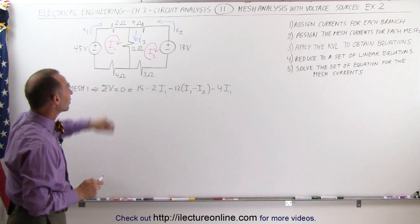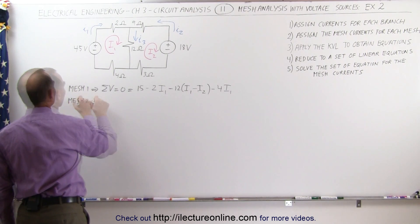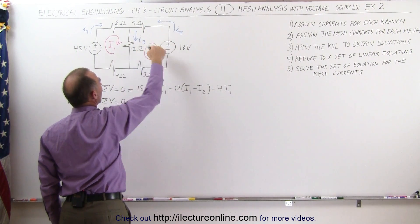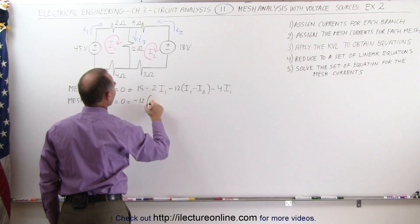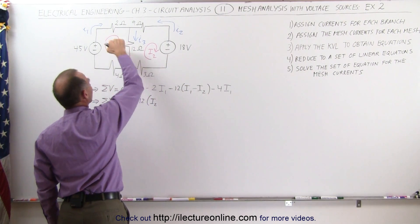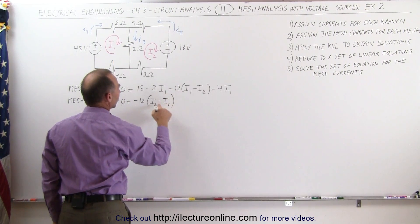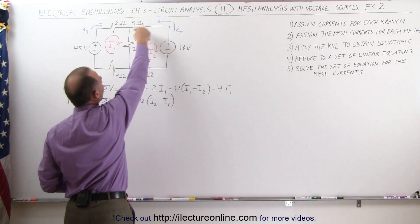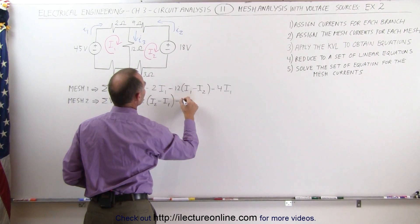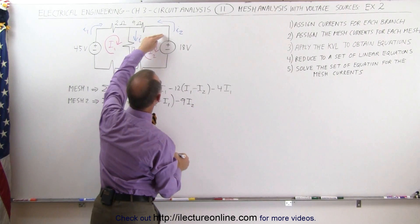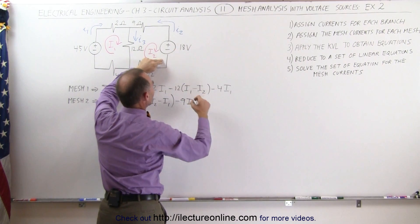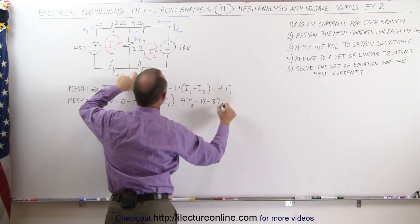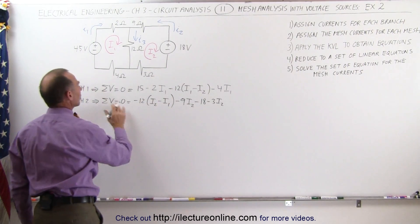For the second equation, we use the second mesh. The sum of all voltages adds up to zero. Starting from this corner, going across the 12 ohm resistor — that's a voltage drop relative to I2: minus 12 times I2. But relative to mesh current I1, which is in the opposite direction, that's a voltage rise: subtract minus I1. Coming around the corner across a 9 ohm resistor, that's minus 9 times I2. Going across the voltage source from positive to negative, that's a voltage drop of 18 volts. Then across a 3 ohm resistor, that's minus 3 times I2. All that adds up to zero.